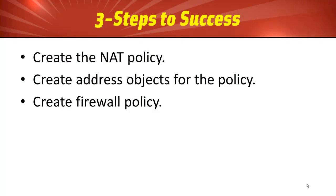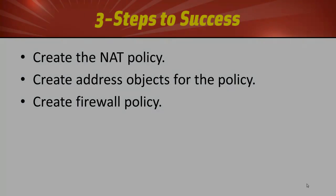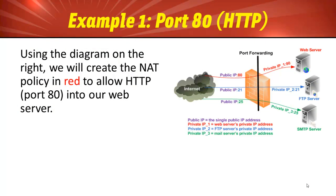There are three steps we have to go through. First, we're going to create a NAT policy. Within that NAT policy we're going to create unique address objects for our network servers as well as the services. Finally, we need to create the firewall policies to open up those ports and allow access. For our first example we're going to open up port 80 to our web server on the LAN side, mapping it through the firewall using a single public IP address.